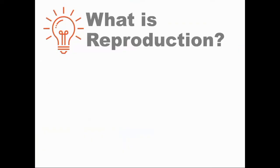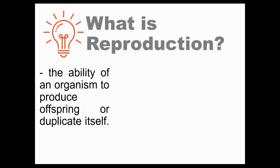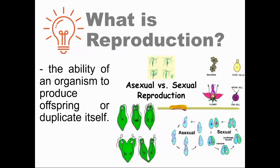Now, what is reproduction? Reproduction is the ability of an organism to produce offspring or duplicate itself. It is one of the unifying themes of life that is shared by all organisms, from simple to complex organisms. There are different types of reproduction — we have asexual reproduction and sexual reproduction.